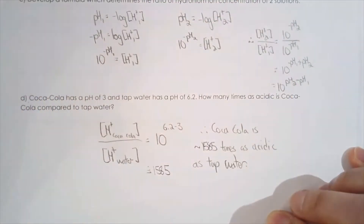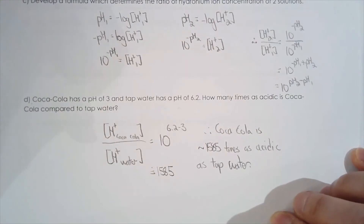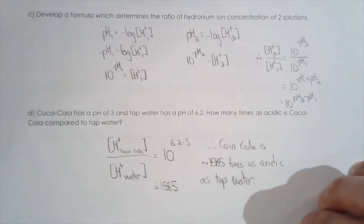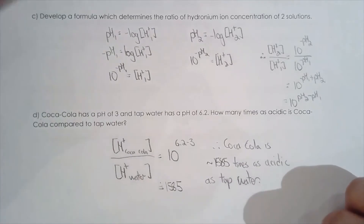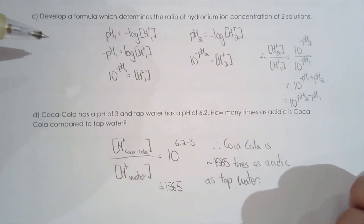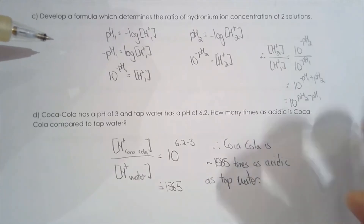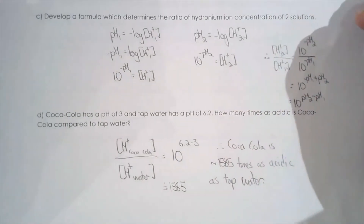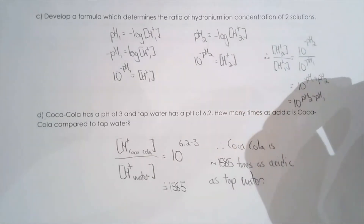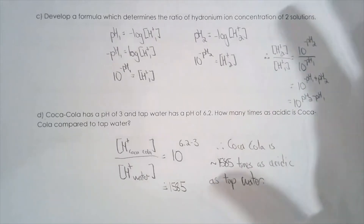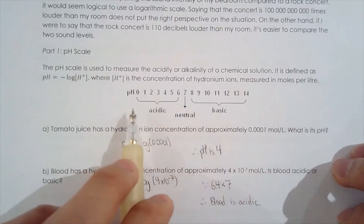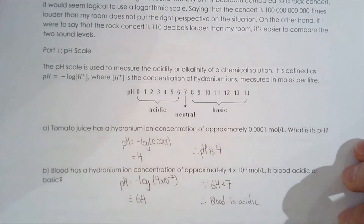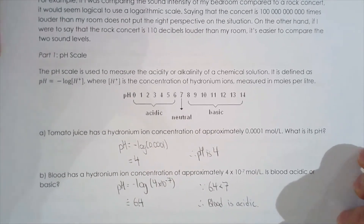So that's our first logarithmic scale. Hopefully you can see the advantage of using the logarithmic scale: it takes these concentrations which vary greatly — you can have 1 times 10 to the negative 3 versus 1 times 10 to the negative 12 — they have a very large range of values. It's hard to interpret because the range is so great. By using this logarithmic scale, you take that range and it shrinks dramatically, so now we're working with numbers between 0 to 14. It's much easier to interpret. That's a really powerful use of logarithms.